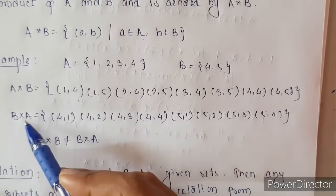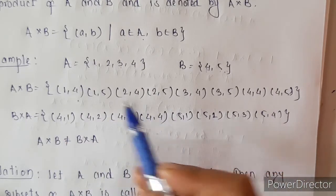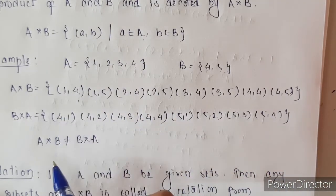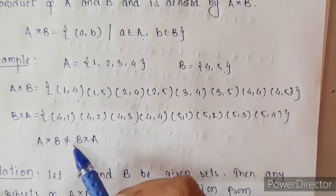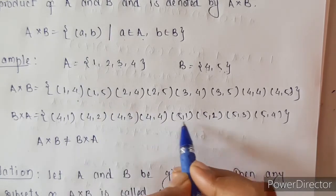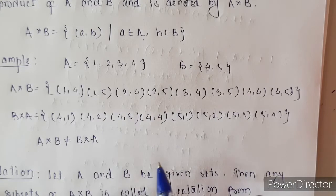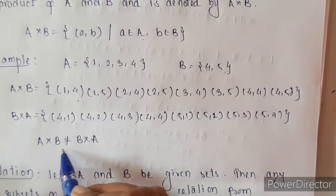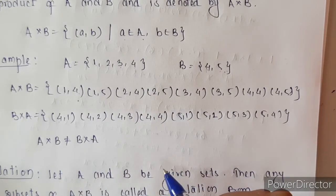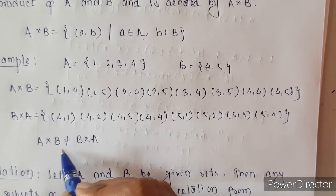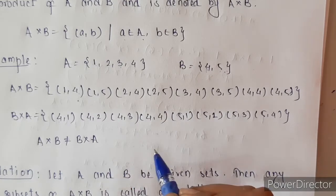Now let us compare A cross B and B cross A. Here we have (1,4) and here we have (4,1) but both are not equal. Again, we have (1,5) and (5,1) but both are not equal. Hence, A cross B is not equal to B cross A. In specific cases it may be equal, but generally A cross B is not equal to B cross A.